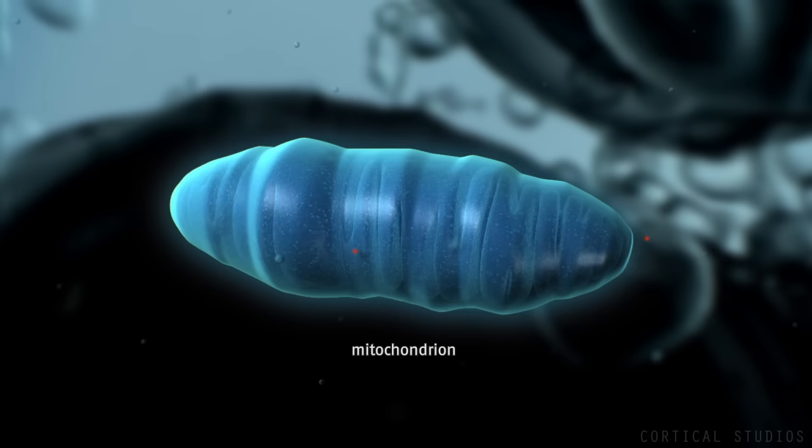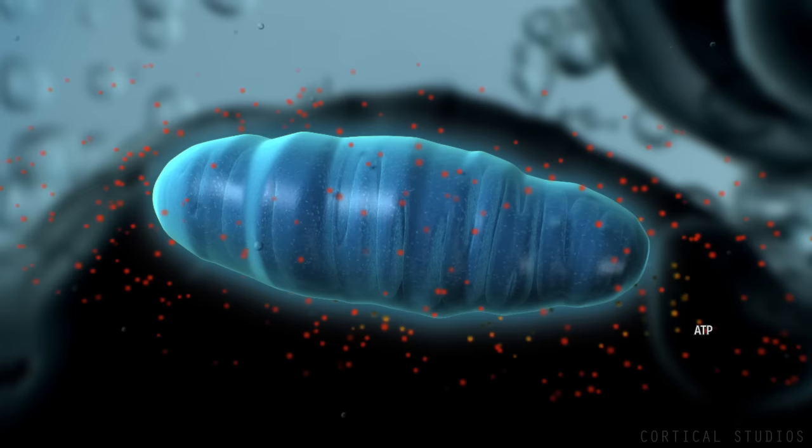Here, food is converted into chemical energy called ATP. ATP is released by the mitochondria so cells can use it.